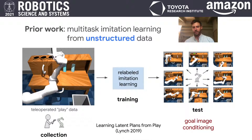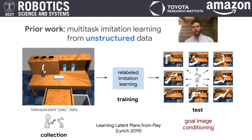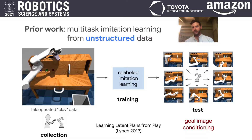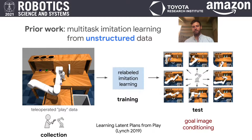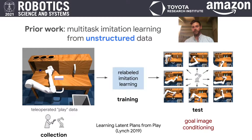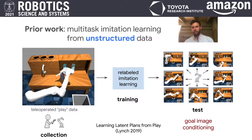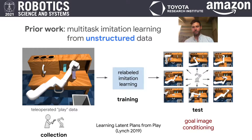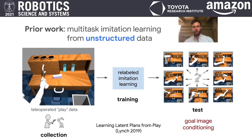Instead, we build on recent work which learns many skills at once using relabeled imitation learning over a large unstructured collection of human teleoperated play data. This kind of collection contains many rich behaviors and is easy to scale, as data can be collected continuously without any resets or task labels. However, relabeled learning also means that behavior at test time must be conditioned with a goal image. Goal images might be easy to provide in simulation, but are often impractical to provide in more open-world settings.